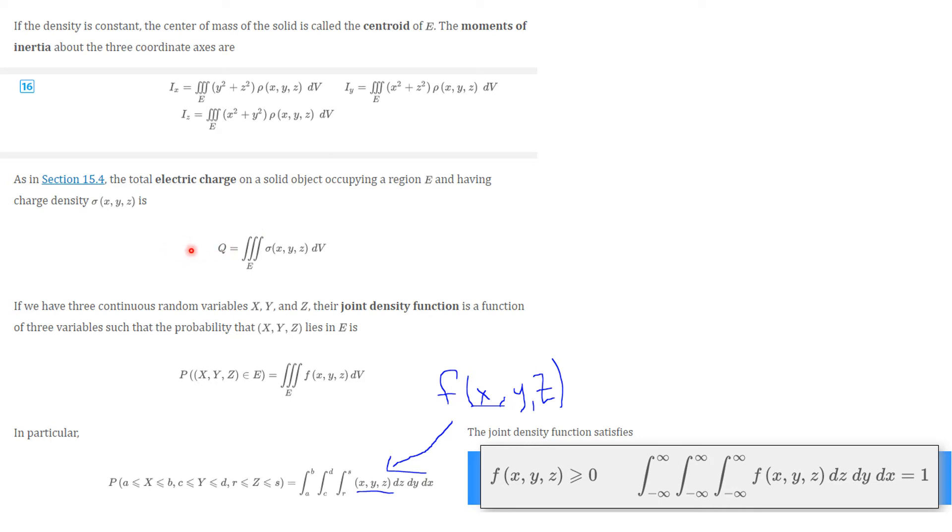The total electrical charge is the integral of, now here you have sigma x, y, z, but that is the charge density per volume by the volume. And again, the charge density can depend on where you are.